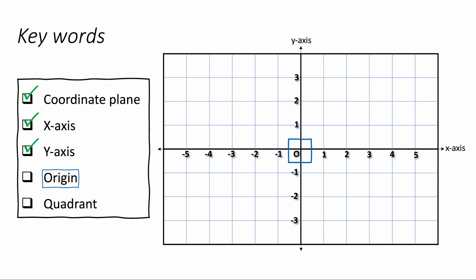The origin is the special name we give for the point in the middle at zero across zero up. So we call that special position the origin.